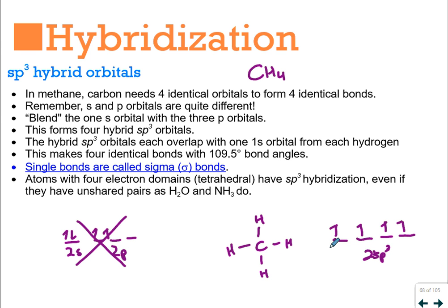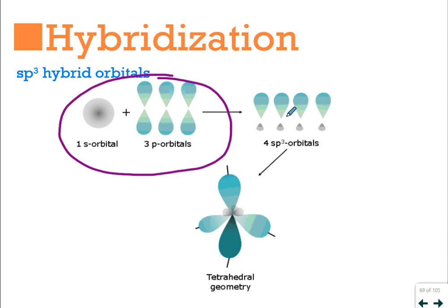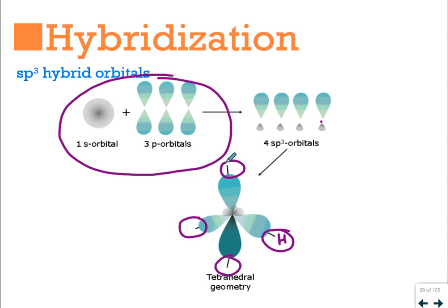In this model, sigma bonds are the single bonds. Atoms with four electron domains are considered to have sp3 hybridization — you may have noticed this on your VSEPR theory guidance document. This is true even for water or ammonia, which may have two or three bonds but have four electron pair domains. Single bonds are called sigma bonds. This single bond between carbon and hydrogen is a sigma bond. The diagram shows the 1S and 3P orbitals becoming four identical sp3 orbitals with a bonding region and an anti-bonding region. In three dimensions, this gives the tetrahedral shape — carbon with four bonding domains, each bonding a hydrogen to give methane.